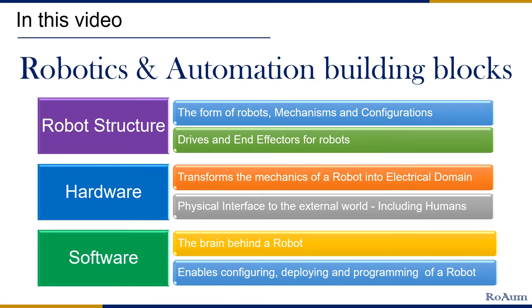Software and programming: the software is the brain behind a robot. Without the software, the robot will not function or not function as intended and can lead to hazards. Software programming gives the users an easy way of configuring, deploying and programming a robot to function in various roles. Having touched upon the basic building blocks, in this video, we will look into and understand the various aspects of the hardware, the components and concepts, and their relation to robotics.